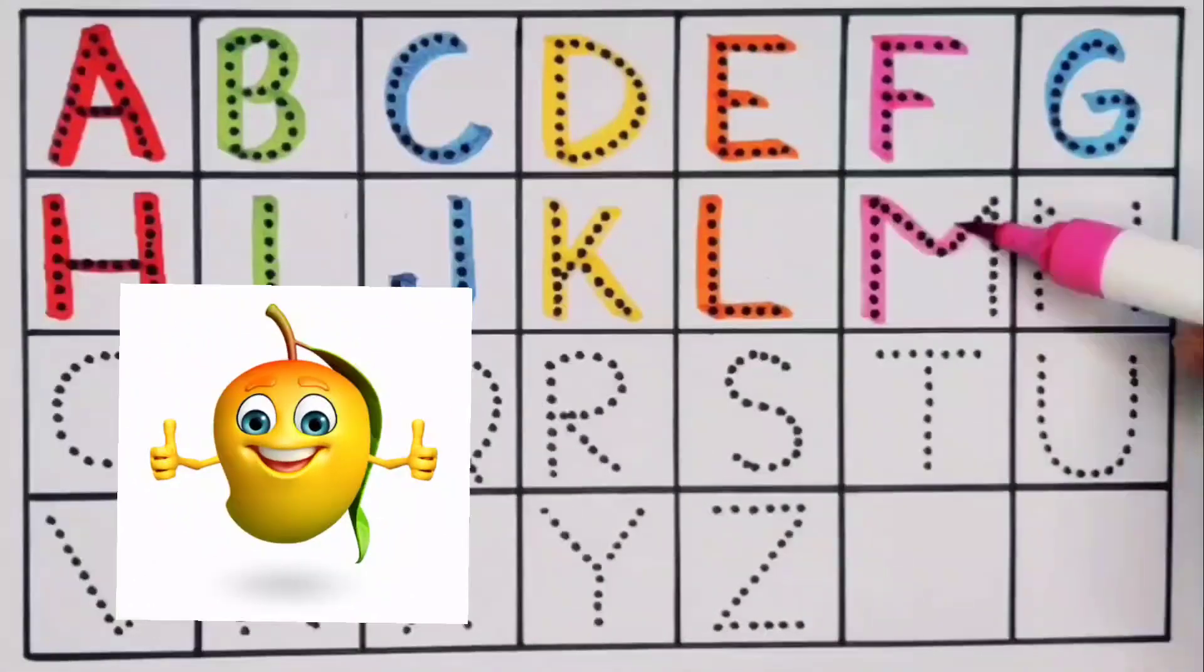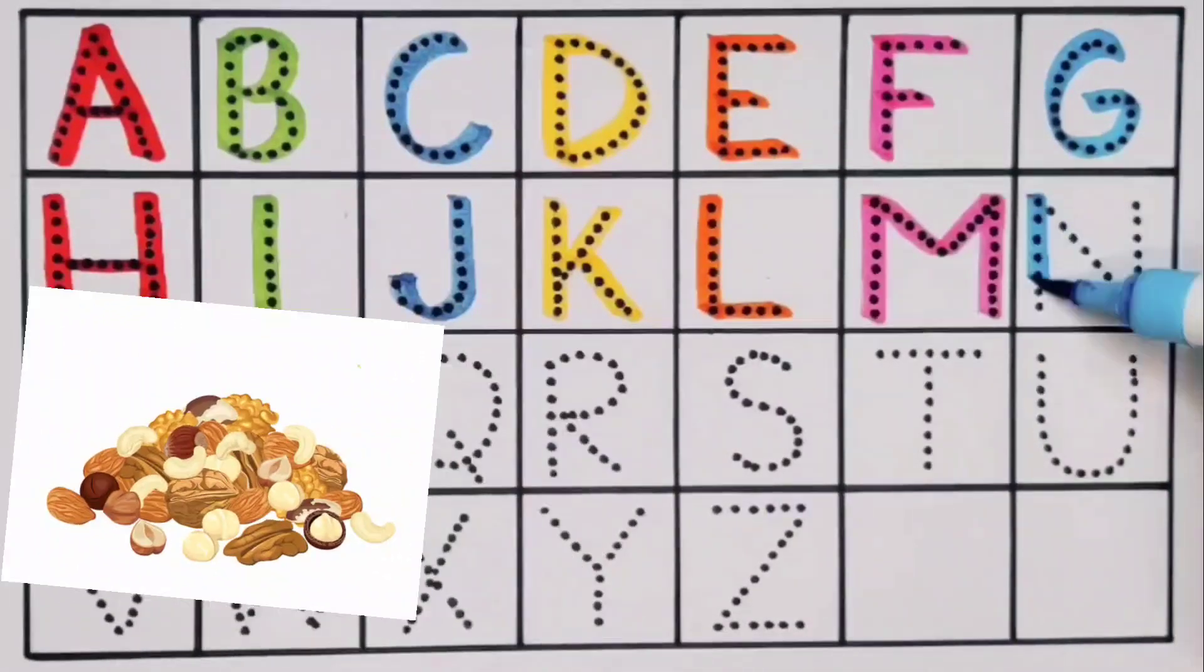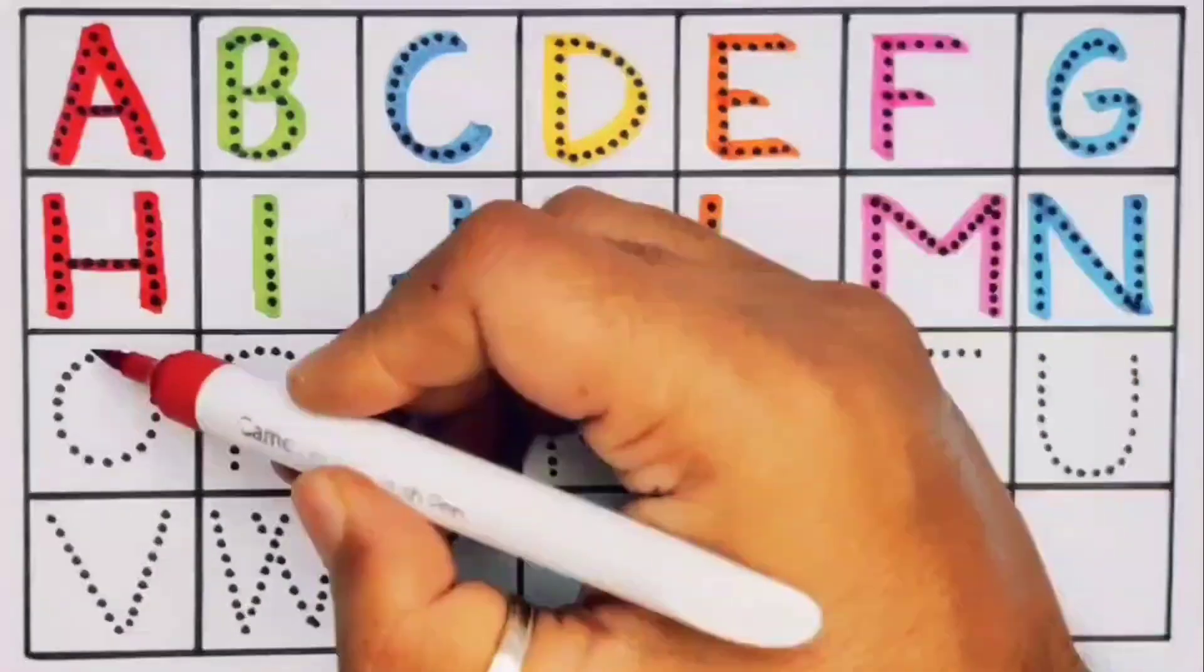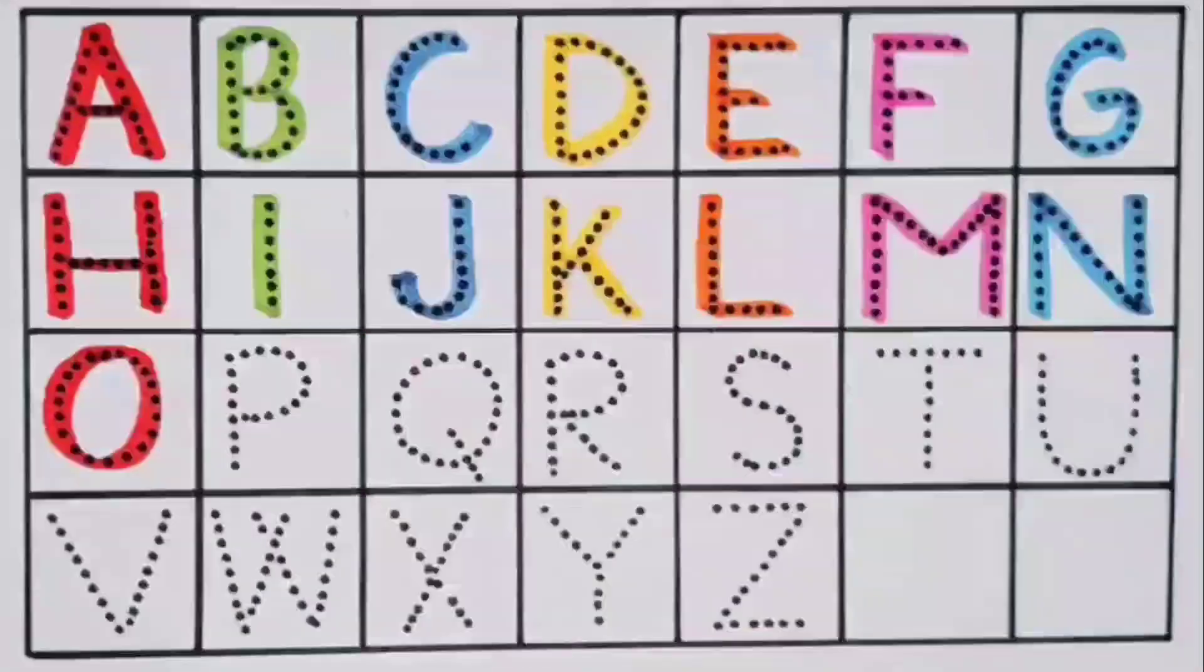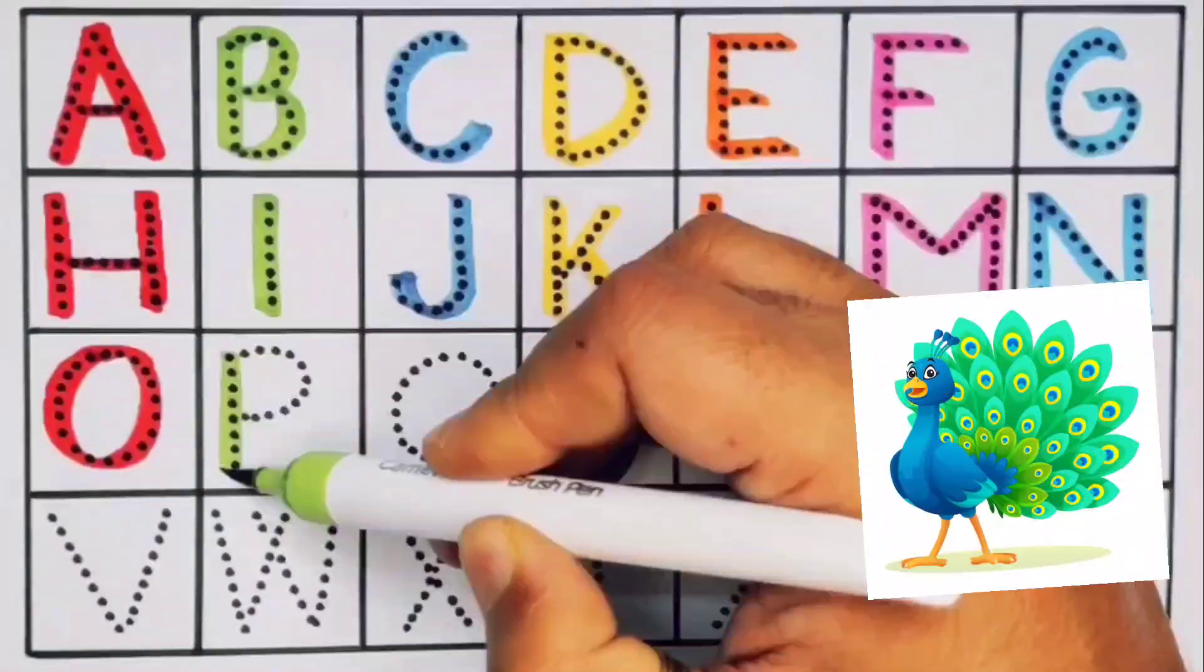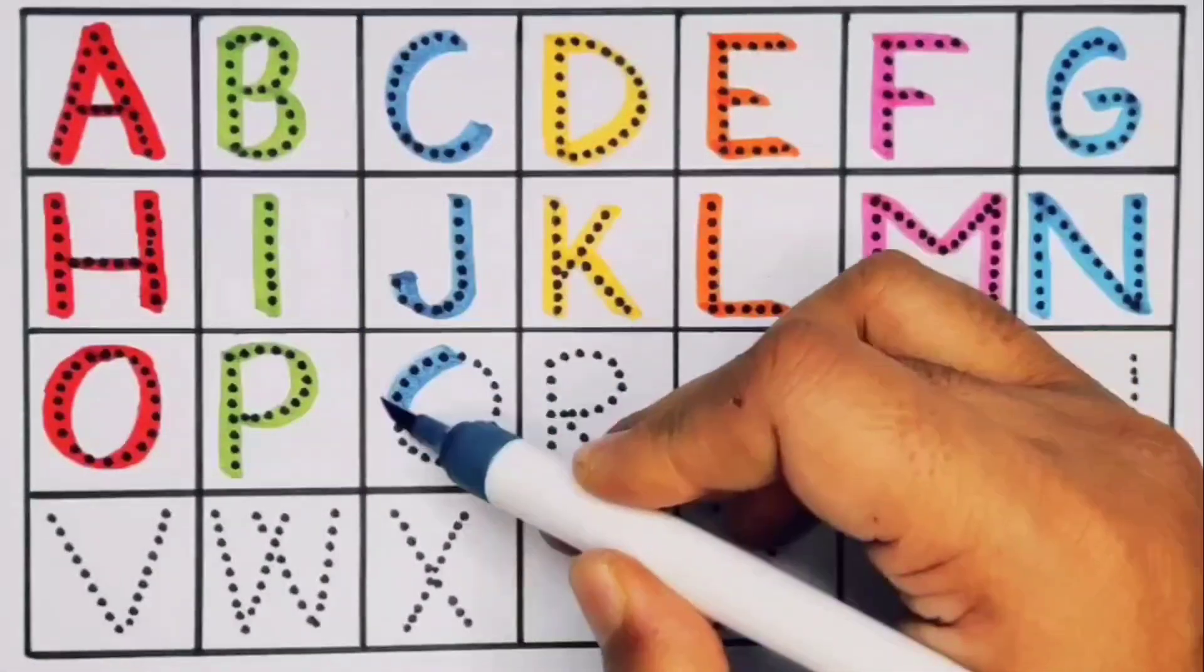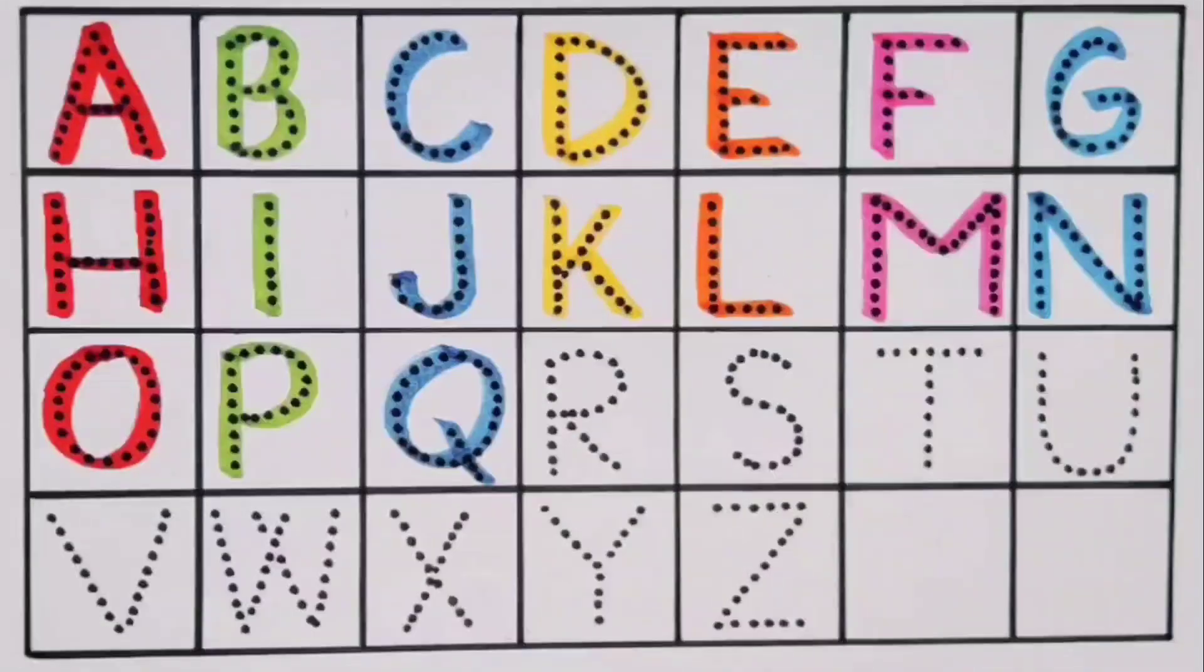Next kids, M, M for mango. Next, N, N for nuts. Next kids, O, O for orange. Next kids, P, P for peacock. Next, Q, Q for queen.